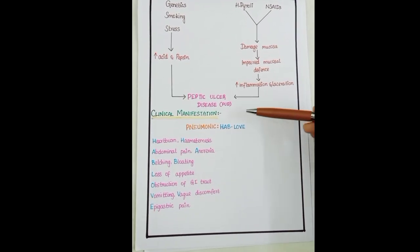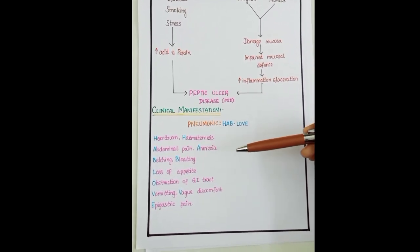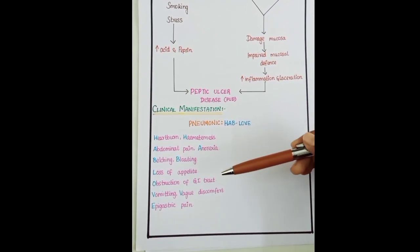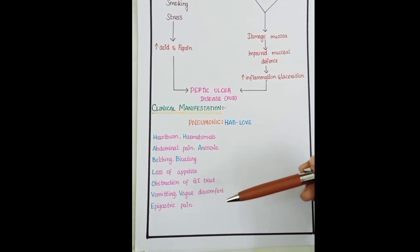Clinical manifestation. H denotes heartburn and hematemesis. A: abdominal pain and anorexia. B: belching and bloating. L: loss of appetite. O: obstruction of GI tract. V: vomiting and vague discomfort. E: epigastric pain.